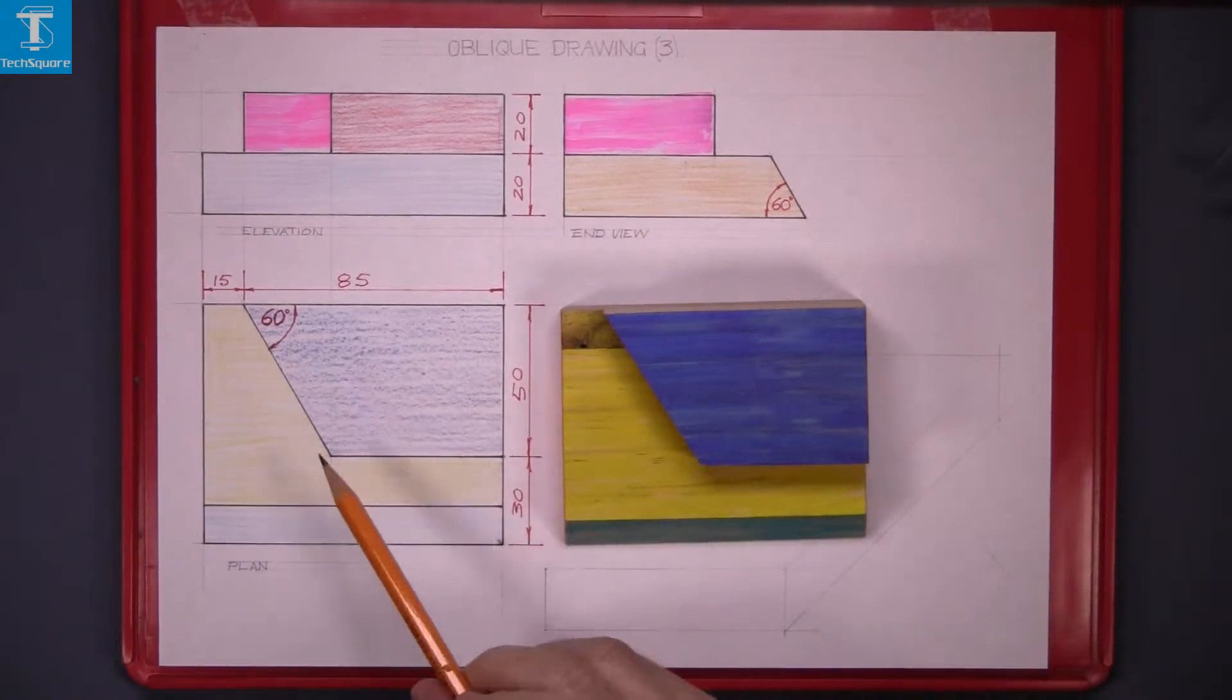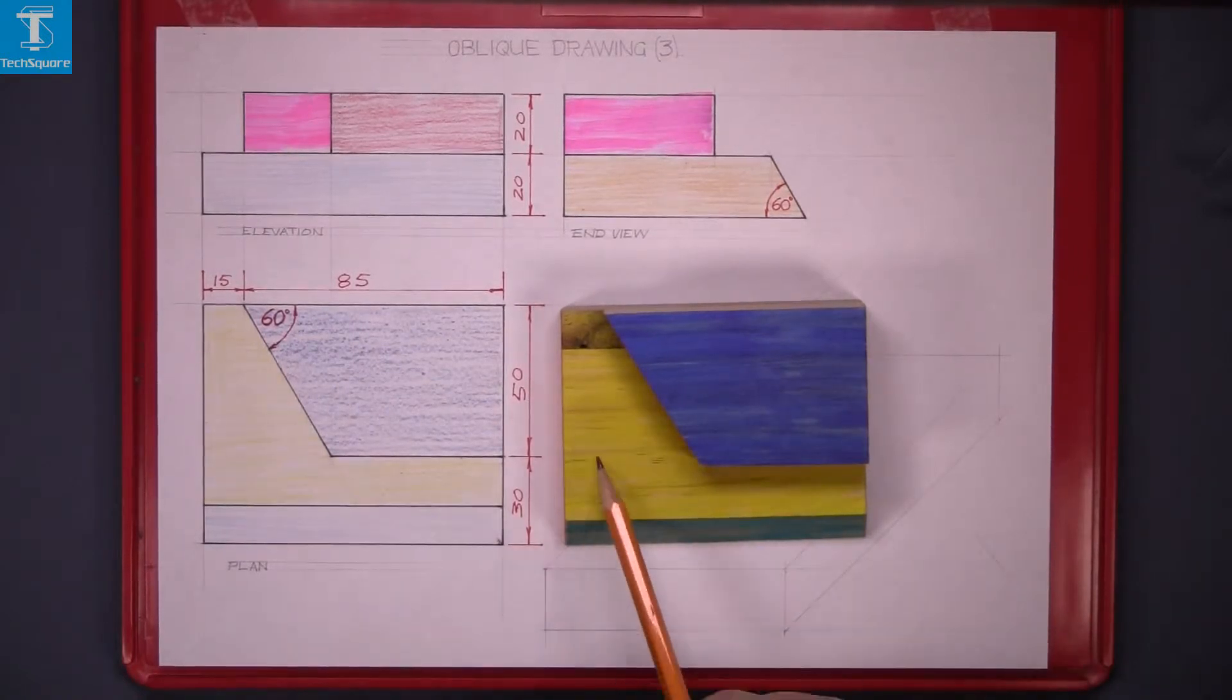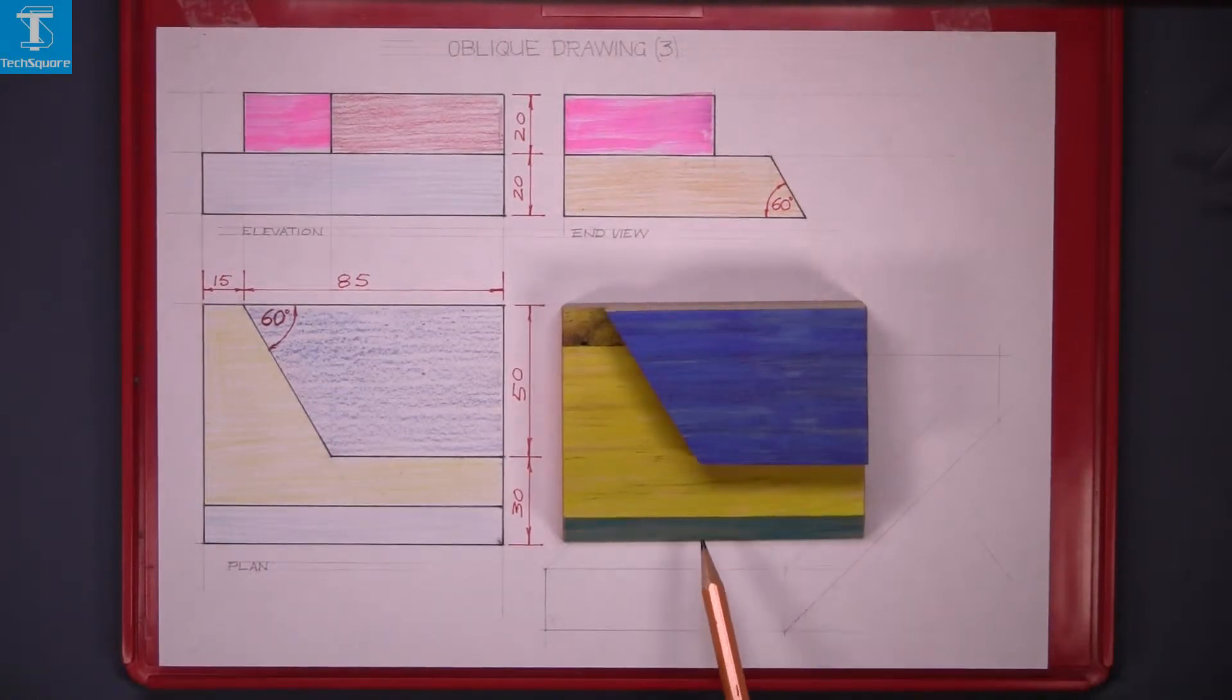The blue is the top, the yellow is the next step down and the light blue is the sloping front on the piece there.